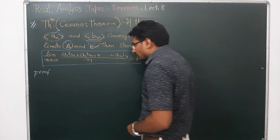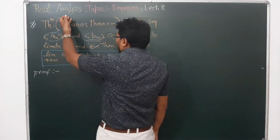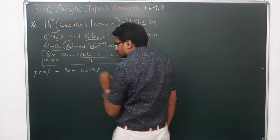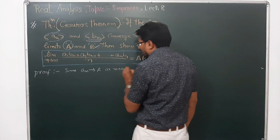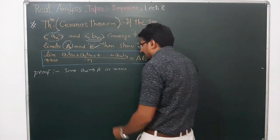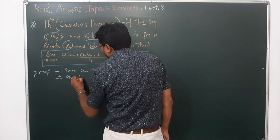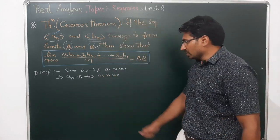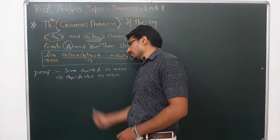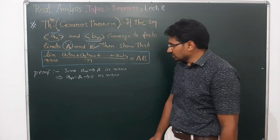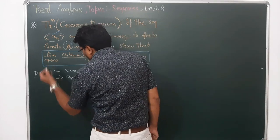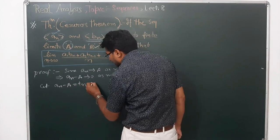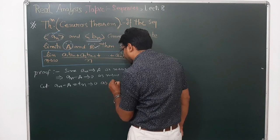The proof is very simple. Since a_n converges to a as n approaches infinity, this implies a_n minus a converges to zero. So a_n minus a is a null sequence. Let us call a_n minus a as t_n, and t_n is converging towards zero as n approaches to infinity.